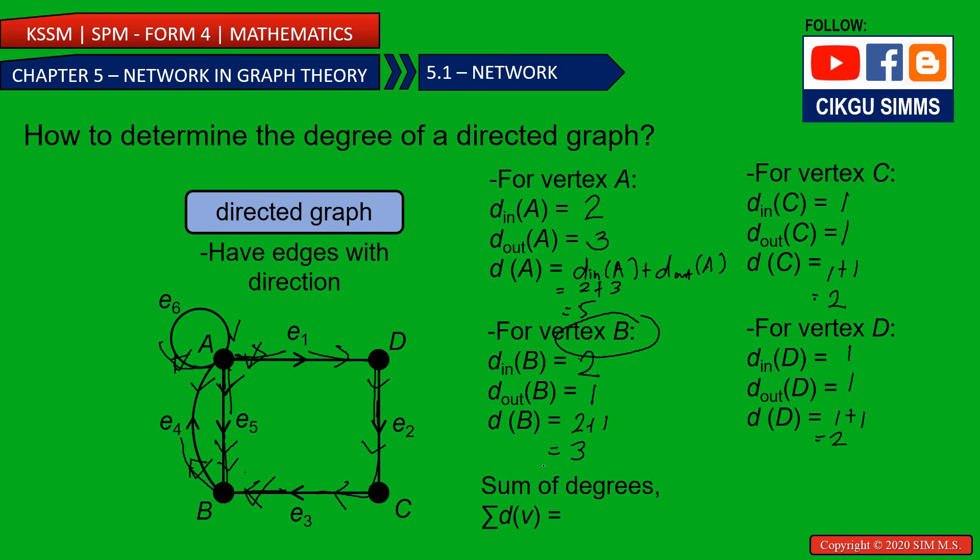So the sum of degrees, you take this value. The degree for A, degree for B, degree for C, and then degree for D. You add them together. So degree for A is five plus three plus two plus two. So answer is 12.